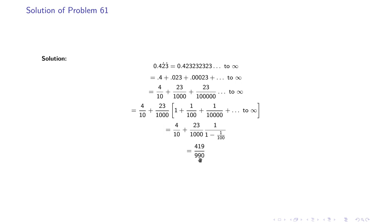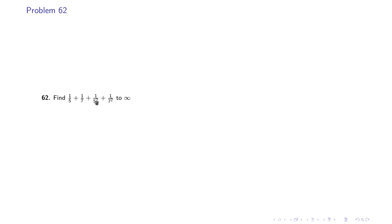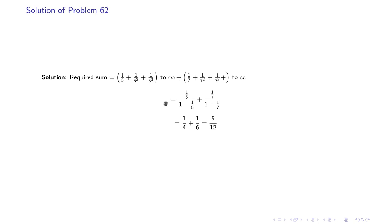Problem 62: Find 1/5 + 1/7 + 1/5² + 1/7² + ... up to infinity. This is a very easy problem — you can see it is made up of two geometric progressions. The first GP is 1/5 + 1/5² + 1/5³ + ... and the second is 1/7 + 1/7² + 1/7³ + ... Applying the infinite sum formula gives 1/4 and 1/6 respectively, so the final value is 5/12.